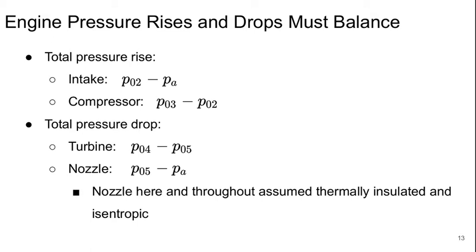The overall pressure rises are in the intake, P02 minus Pa, and in the compressor, P03 minus P02. And for the drops, we have the turbine, P04 minus P05, and the nozzle, P05 minus Pa. We'll always assume our nozzle is thermally insulated and isentropic.